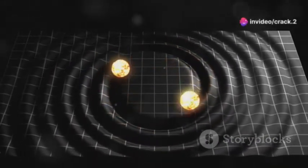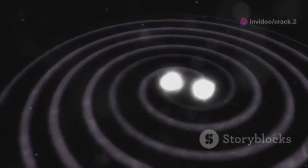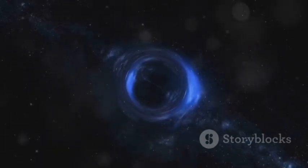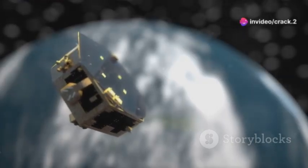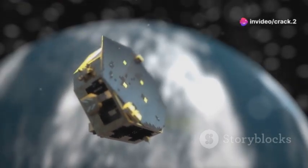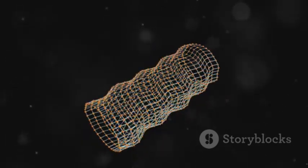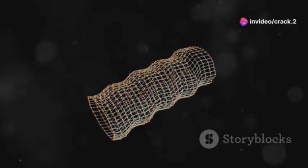Each detection of gravitational waves provides us with a wealth of information about the objects and events that created them. By analyzing these waves, scientists can decode the secrets of the universe, understanding phenomena that were previously beyond our reach. We can learn about the masses, spins, and distances of black holes, the properties of neutron stars, and the physics of the early universe. This information helps us piece together the history and evolution of the cosmos, offering insights into the most extreme environments and events. Gravitational wave astronomy is still in its infancy, but it has the potential to revolutionize our understanding of the cosmos. As technology advances and our detection methods improve, we will be able to explore even more of these cosmic symphonies, uncovering new mysteries and expanding our knowledge of the universe in ways we can only begin to imagine.